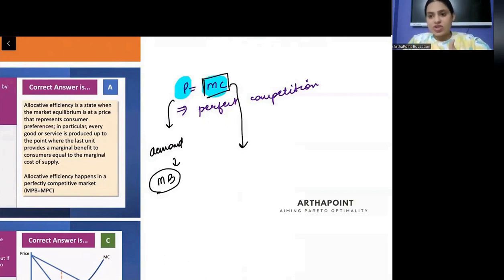When you produce one extra output, what is the related cost? So cost of producing an additional unit of output, that is marginal cost. And we are saying that the two are equal to each other. This is what this means.